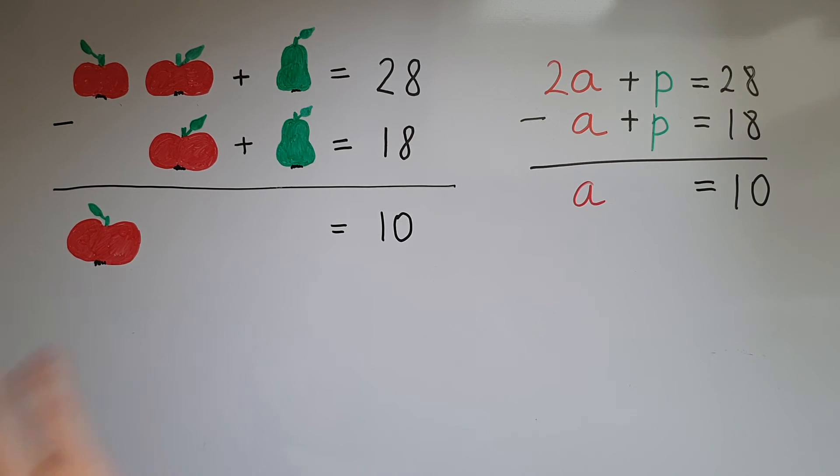So I've worked out the price of the apple, but in order for me to solve the simultaneous equation, I need to find the price of the pear as well. So if I plug this in here, that's going to be 10 add a number equals 18.